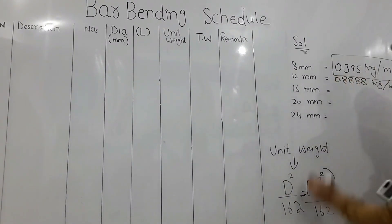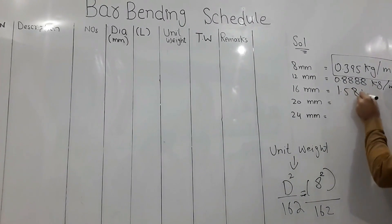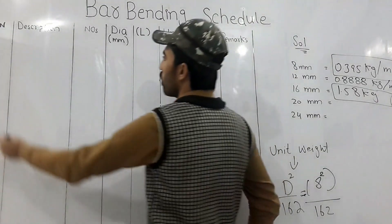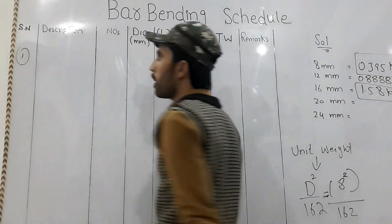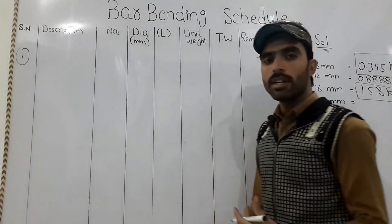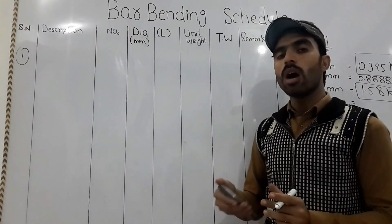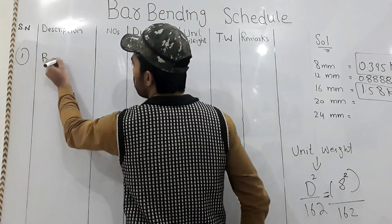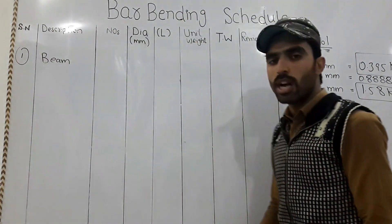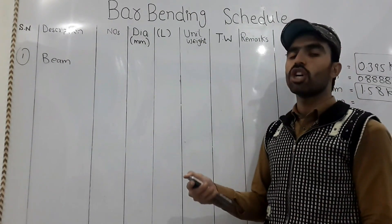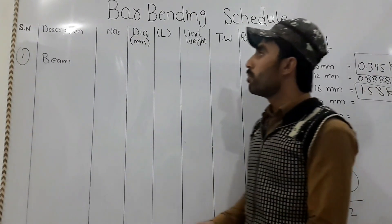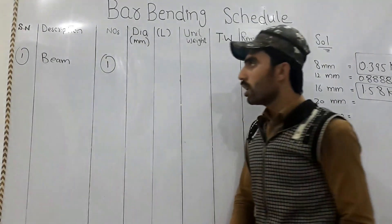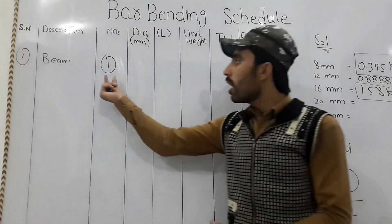Now I want to start a worked example. For serial number one, I don't want to design — I want to calculate the weight of steel, so in the description I will write 'beam'. How many numbers are required? I need one beam here.